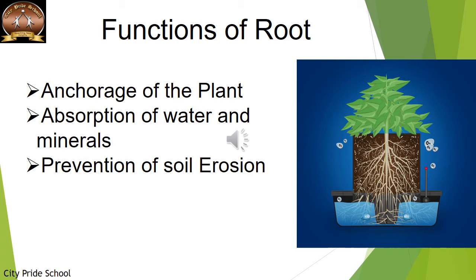Roots also help to anchor the plant — the complete weight of the plant is based on these roots, so they help in anchoring the plant to the soil. A third important function is that roots prevent soil erosion. There are so many roots spreading in different directions, and these roots bind the soil particles and keep them together, which helps anchor the plant and also prevents soil erosion.